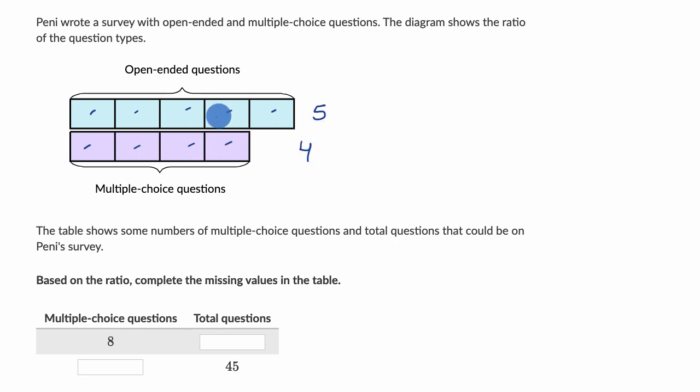And let's be clear, this is showing the ratio of open-ended questions to multiple choice questions. It's not telling us exactly how many of each type of question we have. We just know for every five open-ended, there are four multiple choice, or for every four multiple choice, there are five open-ended.